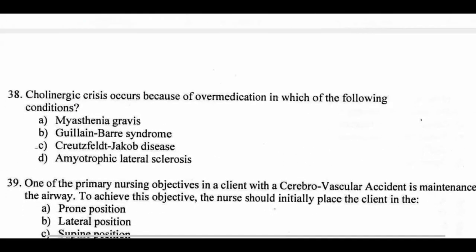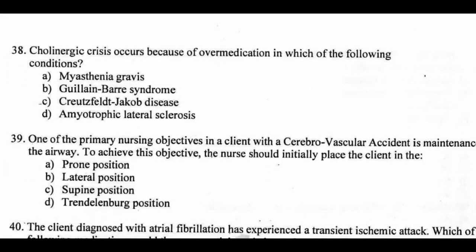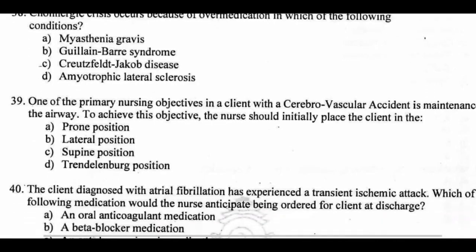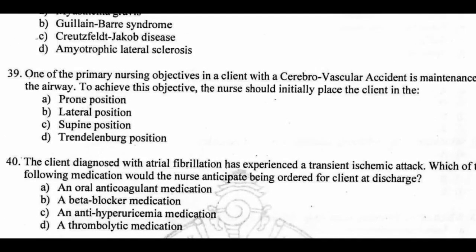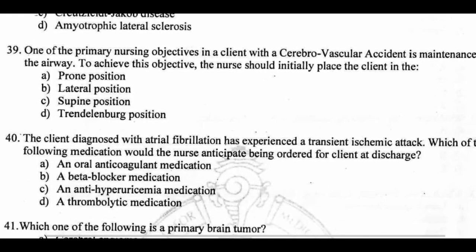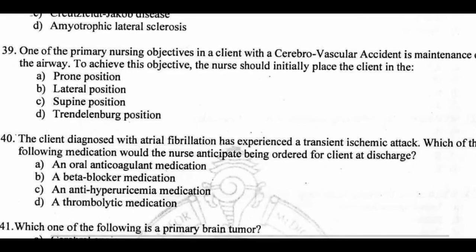Question 38: Cholinergic crisis occurs because of over-medication in which of the following conditions? Options: myasthenia gravis, GBS, Creutzfeldt-Jakob disease, amyotrophic lateral sclerosis. Right answer A: myasthenia gravis. Nursing intervention: lateral position to maintain the airway.